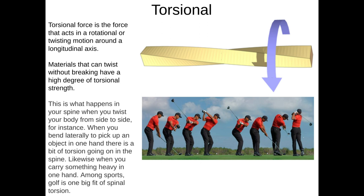Torsional force is the force that acts in a rotational or twisting motion around a longitudinal axis. Materials that can twist without breaking have a high degree of torsional strength. This happens in your spine when you twist your body from side to side, bend to pick something up, or carry something heavy in one hand. A really good example is a golf swing — you can see Tiger Woods undergoing his tee shot, his spine going through a huge torsional rotation. If his spine had poor torsional strength, he would break it.